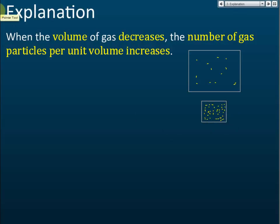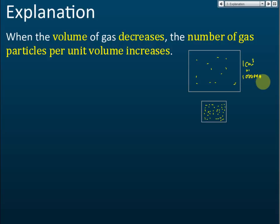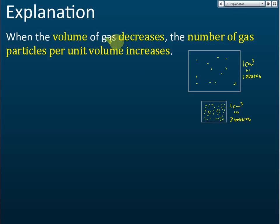For example, in one cubic centimeter there may be one million gas molecules. But if we compress it, the gas particles are closer to each other. So for the same one cubic centimeter, after compression we may have three million gas particles. When the volume of gas decreases, the number of gas particles per unit volume increases — where one unit is one cubic centimeter or one cubic meter.